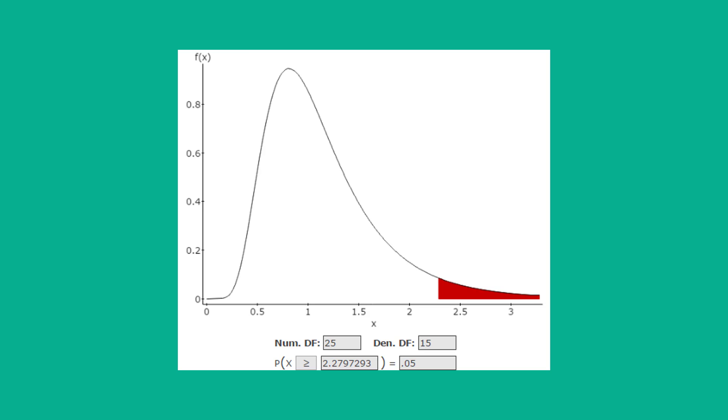If we're looking for critical values we have to put in alpha, our level of confidence, 1 minus the level of confidence to give us our level of significance alpha. In here I put all of alpha in the right tail, 0.05. This would be a one tail test. If we're dealing with a two tail test then we would put half of alpha into this right tail, and I'll show you that in a few minutes.